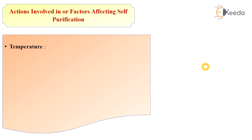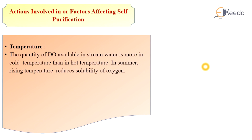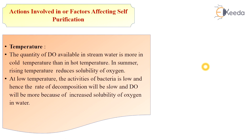The next important parameter is temperature. The quantity of dissolved oxygen available in stream water is more at cold temperatures than at hot temperatures, because in summer, rising temperature reduces the solubility of oxygen. At low temperature, the activity of bacteria is reduced and hence the rate of decomposition will also be slow, and dissolved oxygen will be more because of increased solubility of oxygen in water.